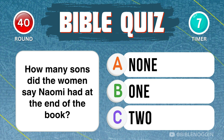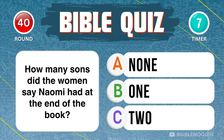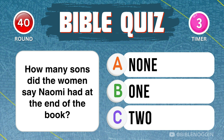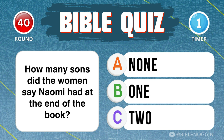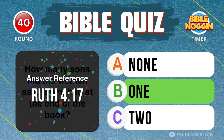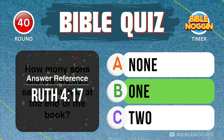Final question, Question 40: How many sons did the women say Naomi had at the end of the book? One — found in Ruth chapter 4, verse 17.